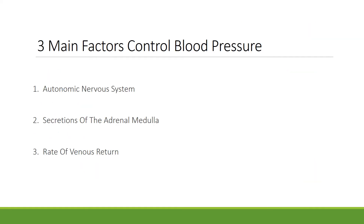There are three main factors that control blood pressure. They are the autonomic nervous system, or ANS, secretions of the adrenal medulla, and the rate of venous return.